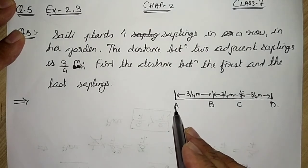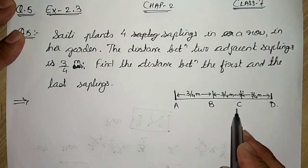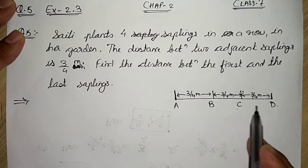A, B, C, D. Let this be sapling A, sapling B, C and D. 1, 2, 3 and 4 saplings.